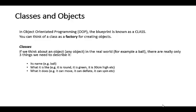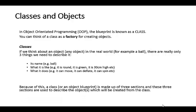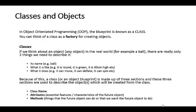So any class that we create is going to have these three descriptions. It's going to have a name, it's going to have what it's like and what it does. And because of this, a class is made of three sections. They are a class name, its attributes, and its methods.